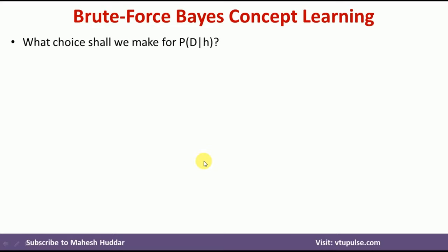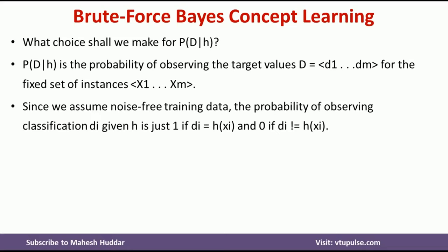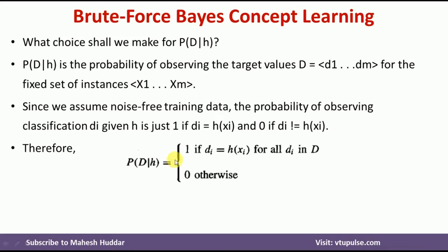Similarly, what will be the choice for P(D|H) — the likelihood — given those three assumptions? P(D|H) is the probability of observing the target values D = {D1, ..., Dm} for a fixed set of instances X1 to Xm. If the hypothesis is consistent with the training examples, P(D|H) = 1; otherwise it equals 0. Consistency means that for each instance Xi, the target Di equals the hypothesis output H(Xi). If they match, the hypothesis is consistent and P(D|H) = 1; otherwise P(D|H) = 0.